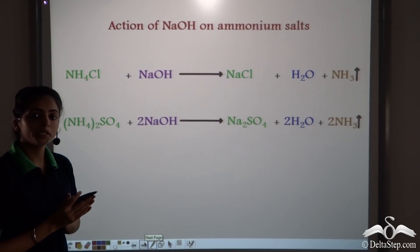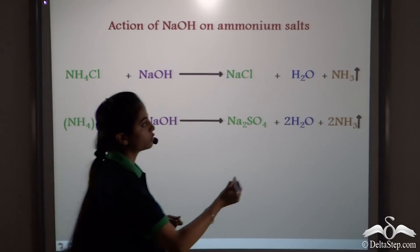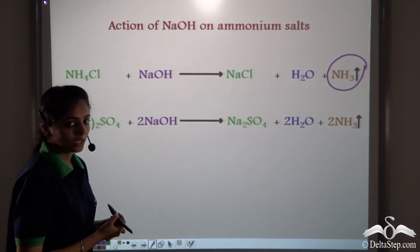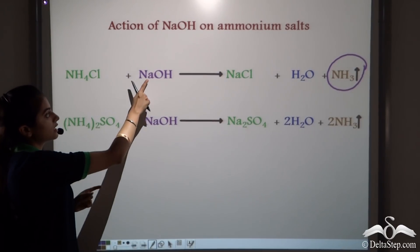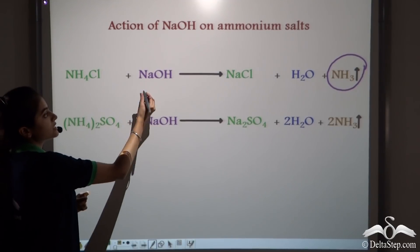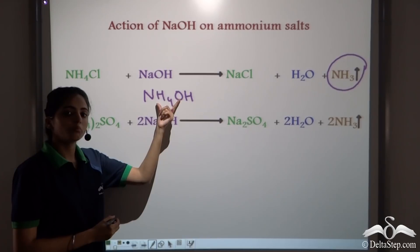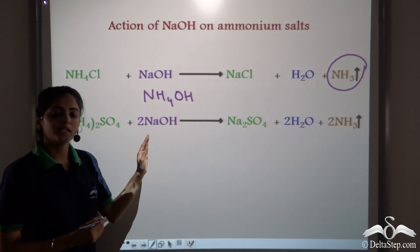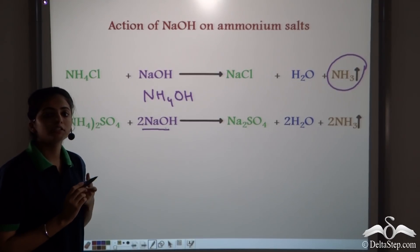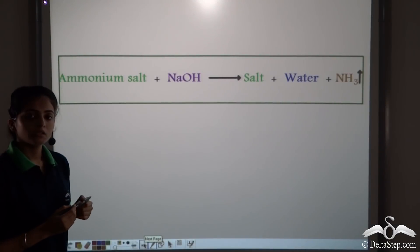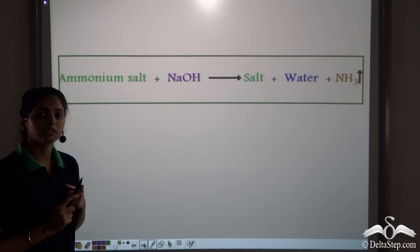Now what is the action of NaOH on ammonium salts? Whenever ammonium salts react with NaOH, they form the corresponding salts, water, and they release ammonia gas. When a base reacts with a salt, it forms another base and another salt. In this case, it forms NaCl and NH₄OH. This is a highly unstable base — it quickly decomposes to give H₂O and NH₃. So whenever NaOH reacts with an ammonium salt, it always forms the corresponding salt, water, and releases ammonia gas.